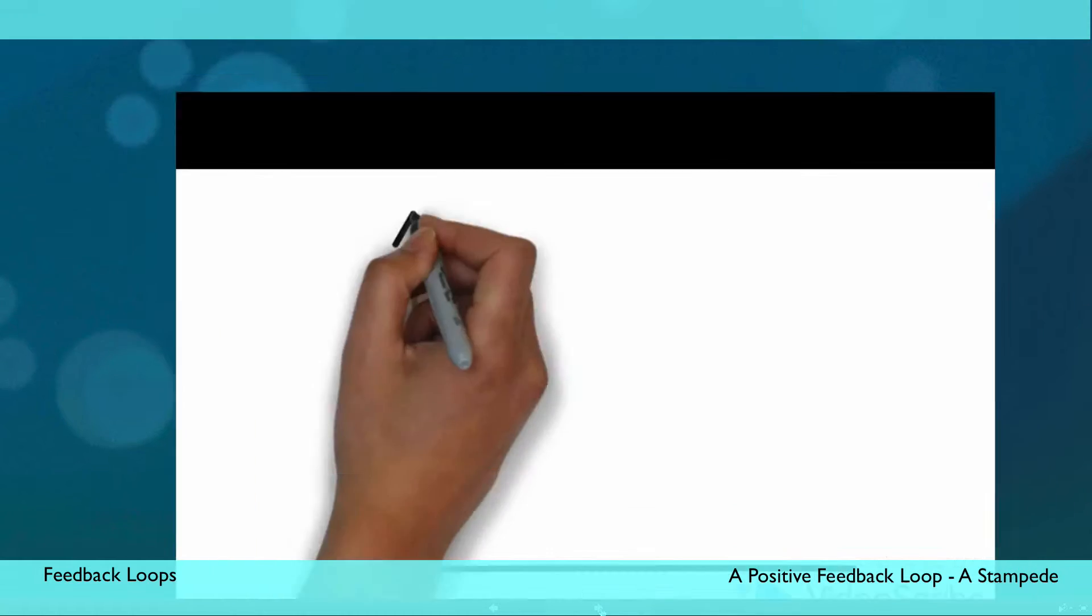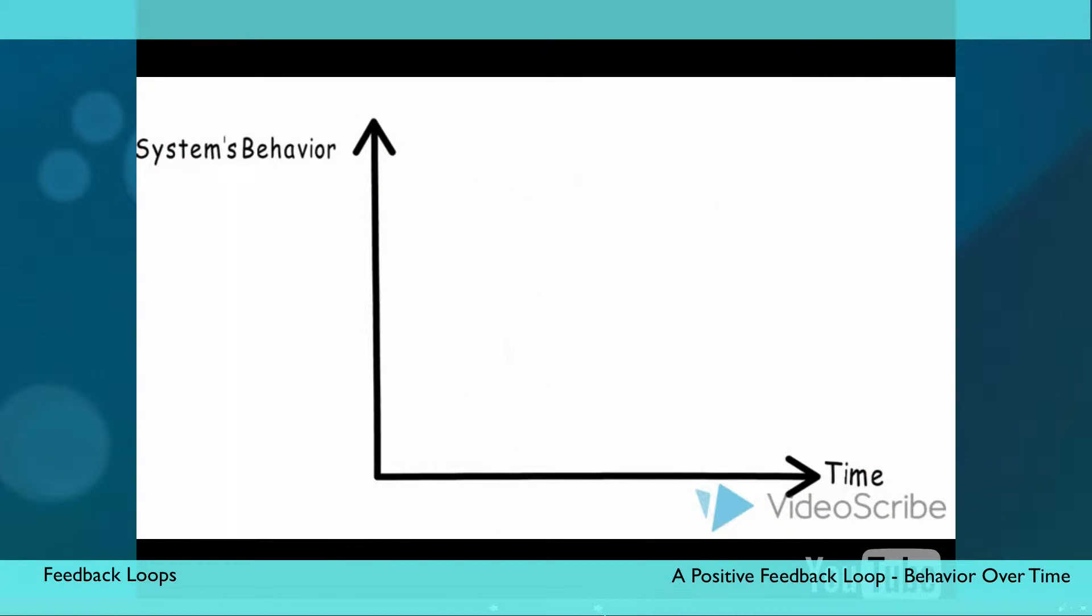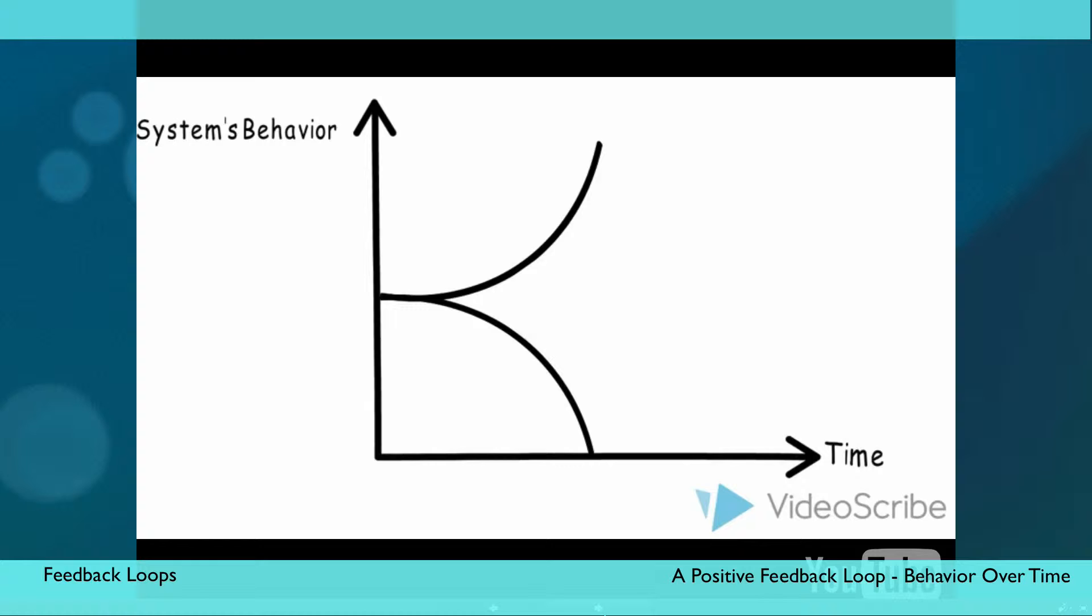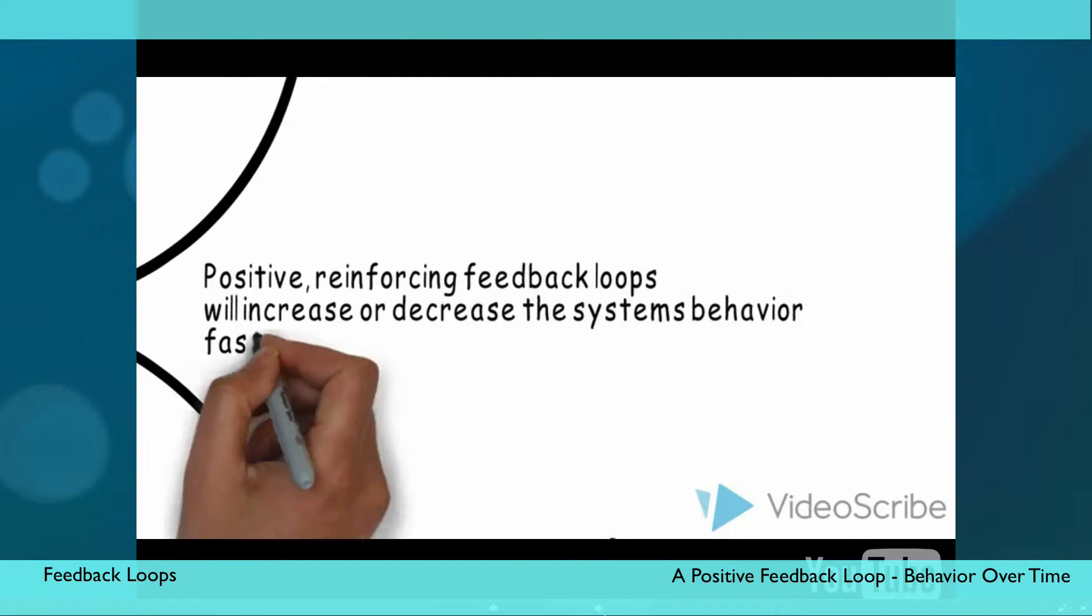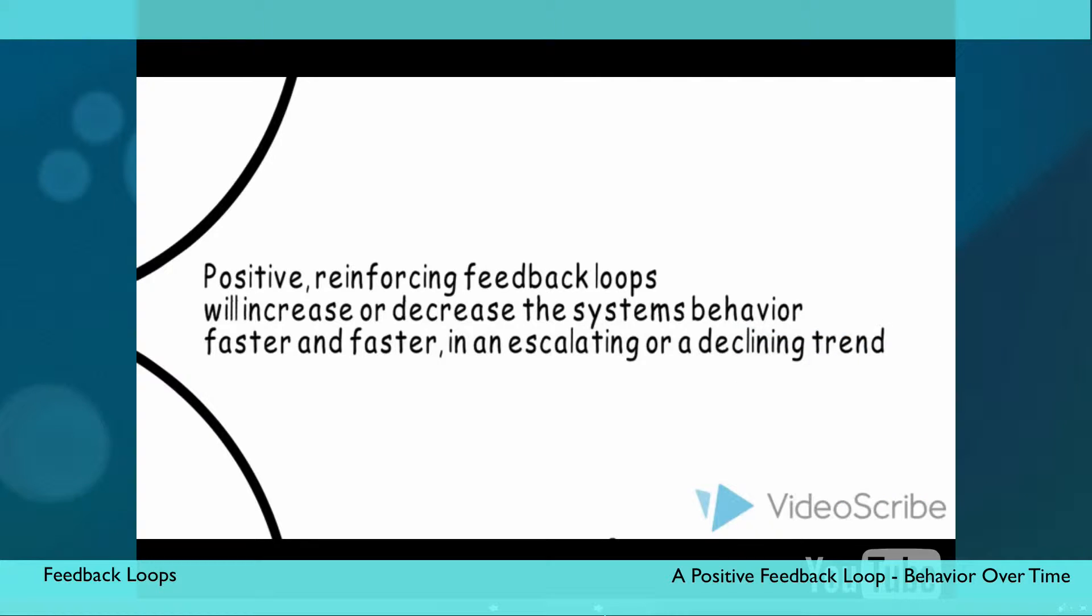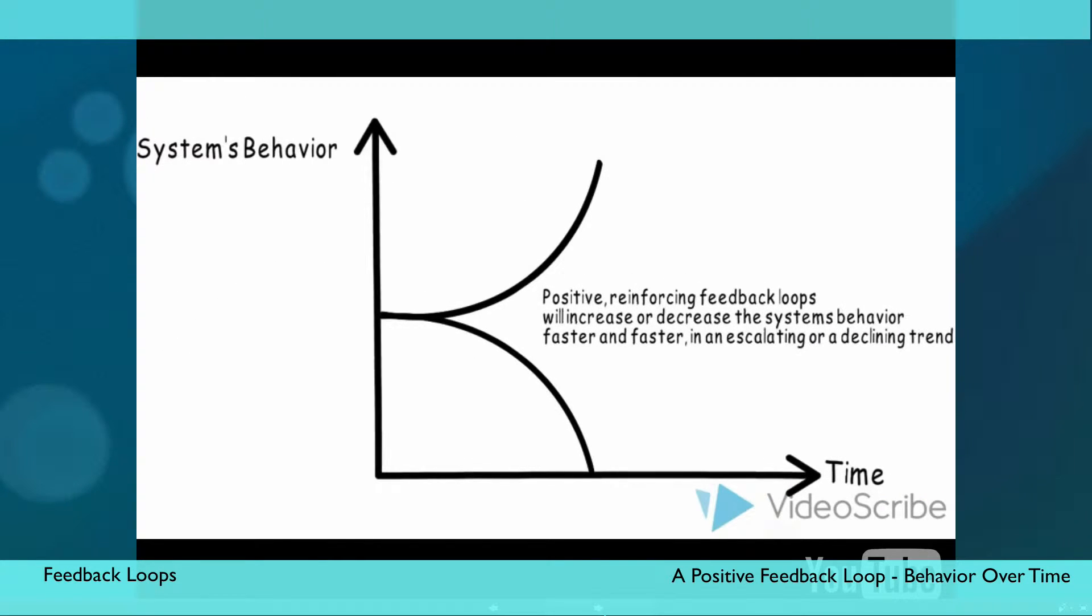This is how the dynamic of the positive feedback loop looks over time. Positive reinforcing feedback loops will increase or decrease the system's behavior faster and faster, in an escalating or declining trend. This dynamic may be familiar to you from module 5, where we saw the non-linear behavior of complex systems. These dynamics are also the reason that in some contexts, a reinforcing feedback loop may be referred to as a vicious circle, because it can create a dynamic which is hard to stop, very much like a stampede.